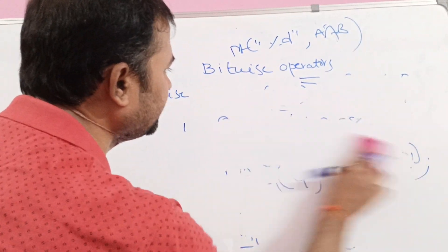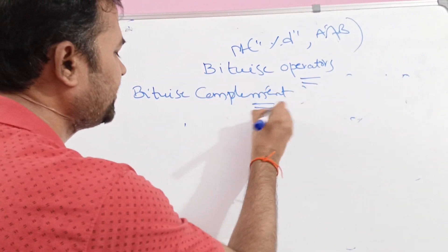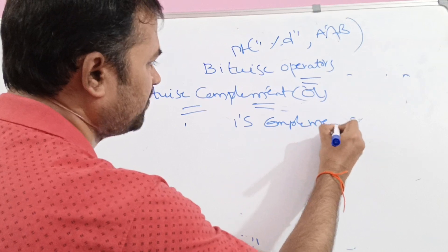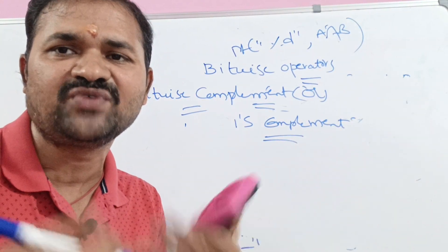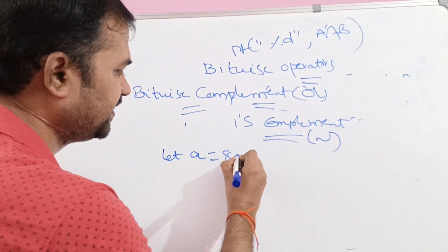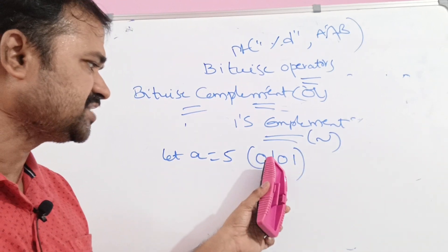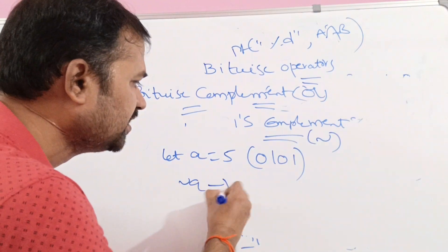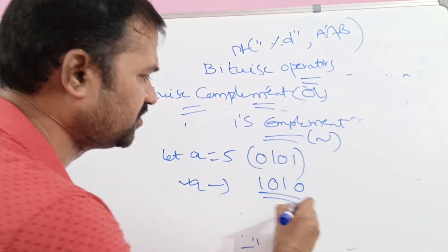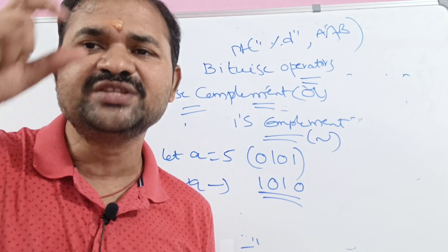The last operator is the bitwise complement operator, also called the one's complement operator, denoted by the tilde symbol (~). In one's complement, zeros are converted to ones and ones are converted to zeros. For example, let A equal 5, whose binary representation is 0101. After complement: 0 becomes 1, 1 becomes 0, 0 becomes 1, 1 becomes 0, giving 1010.